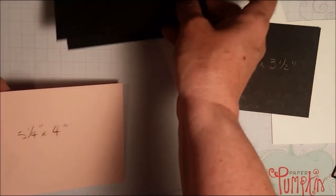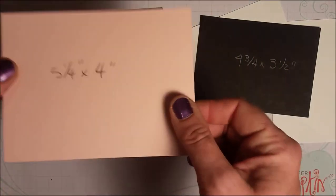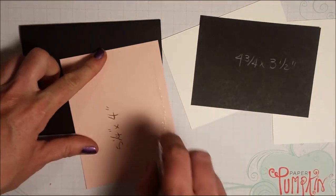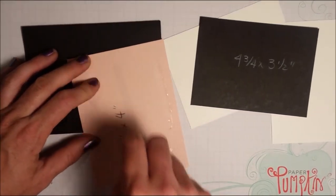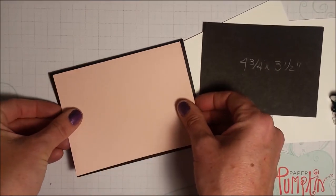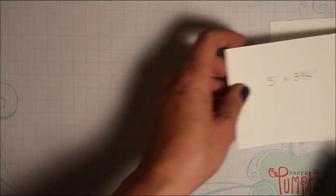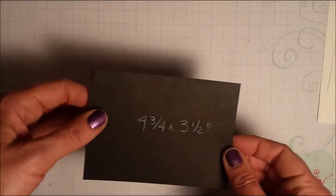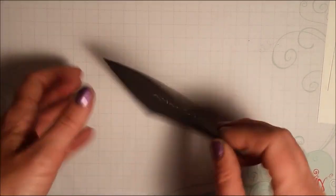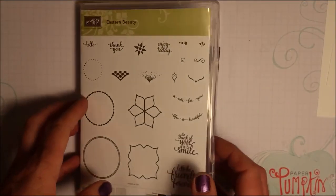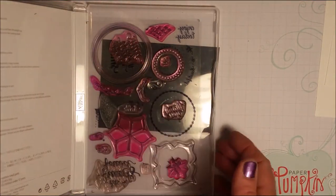So the first thing I'm going to do is adhere this onto my card base. I'll just grab my snail and put that right down there. So that can be set aside. Now, this piece is going to be embossed so I'm going to flip that over and I am going to take the Eastern Beauty stamp set.